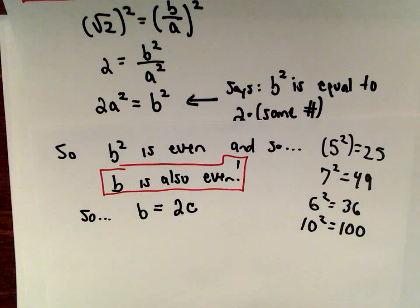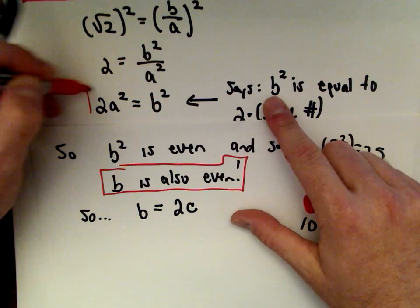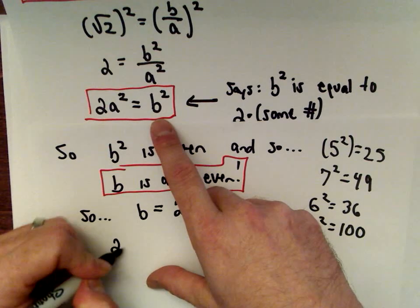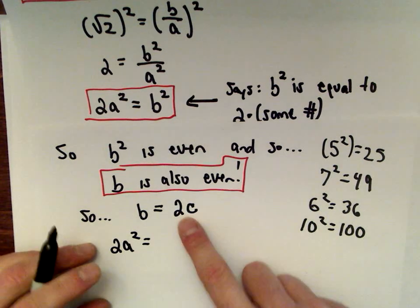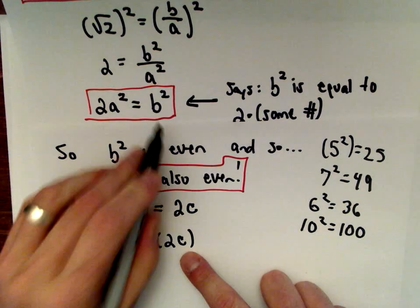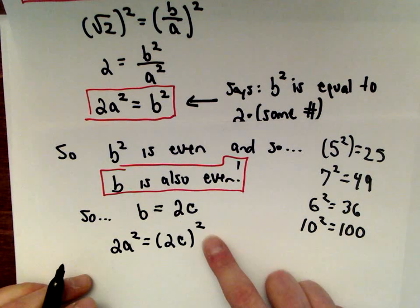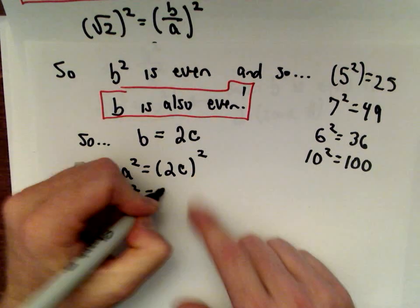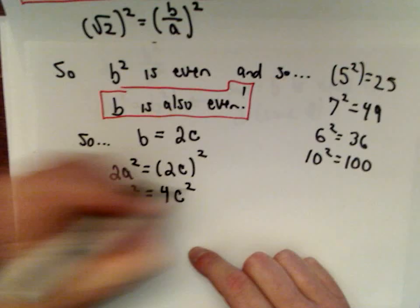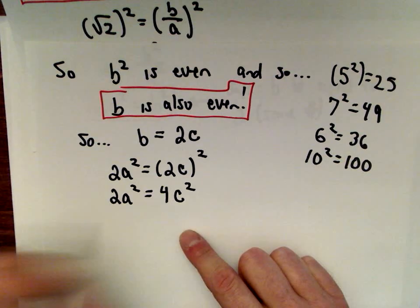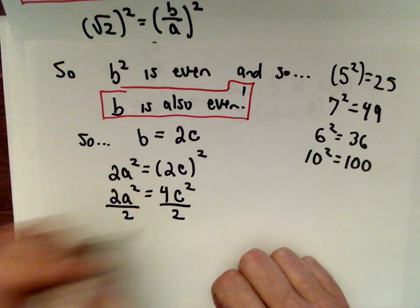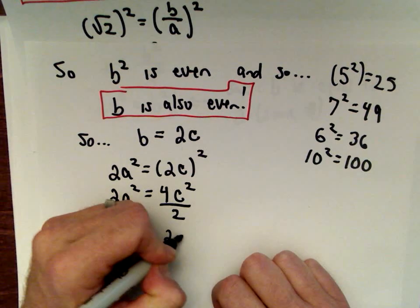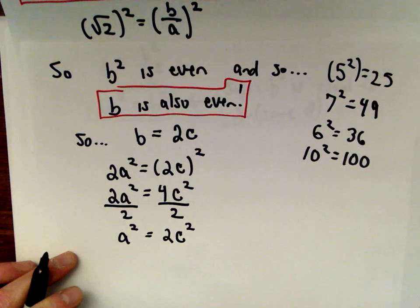Let's go back to the equation we had: 2a squared equals b squared. Let's substitute in the value for b. We've got 2a squared on the left. Since b equals 2c, we have 2c squared on the right — that's 4c squared. So we have 2a squared equals 4c squared. Dividing both sides by 2 gives us a squared equals 2c squared.